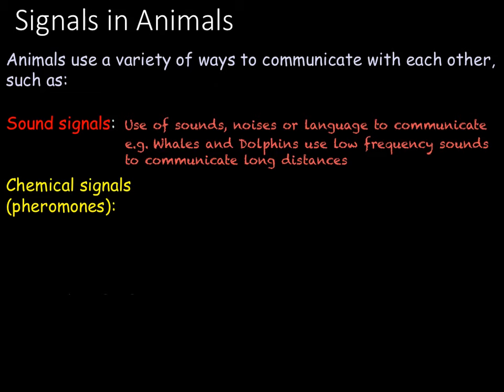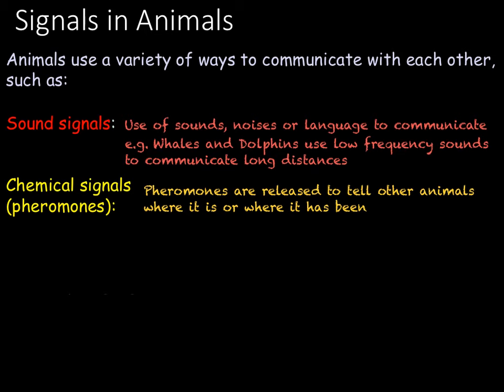The second type of signal you need to know about are chemical signals or pheromones. We came across these before when we looked at plant science in B3.6. Chemicals called pheromones are released by an animal to tell others where it is or where it's been. A common example is that dogs will use scents to mark the boundaries of their territory, deterring other predators. Other animals use pheromones to attract a mate — for example, moths will release a pheromone that can be picked up by a potential mate even several kilometres away. Finally, skunks release a very powerful pheromone to deter predators when they are under attack.